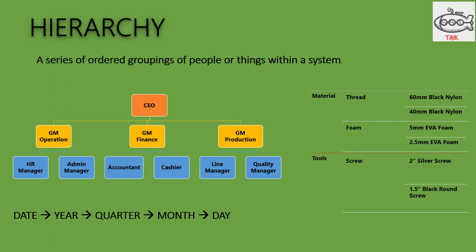Another hierarchy is the date: year, quarter, month and date — this series is also a hierarchy. There is also another kind of hierarchy: category, subcategory and then the product. Here, material and tools is a category; thread, foam and screw is a subcategory; whereas nylon black thread and evap foam screws are all products. In a similar way, we can make our own hierarchy in Power BI. The date hierarchy is by default, but if you want something custom, we can do it in Power BI.